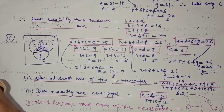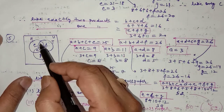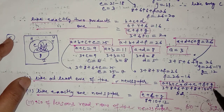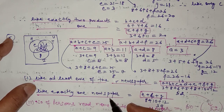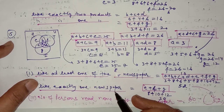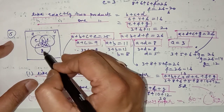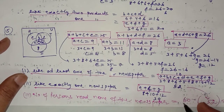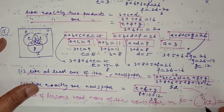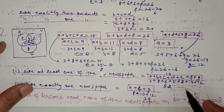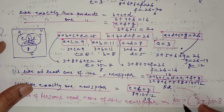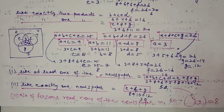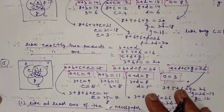It is asked: how many persons read at least one newspaper? That means reading only one, or two, or all three — so find a + b + c + d + e + f + g. How many read exactly one newspaper? That is e + f + g. How many read none? The total survey was 60 people and 52 read at least one, so 60 − 52 = 8 persons read none of the newspapers.